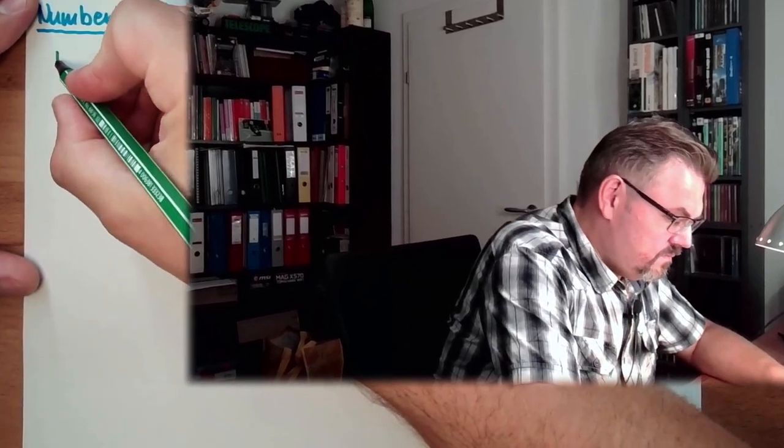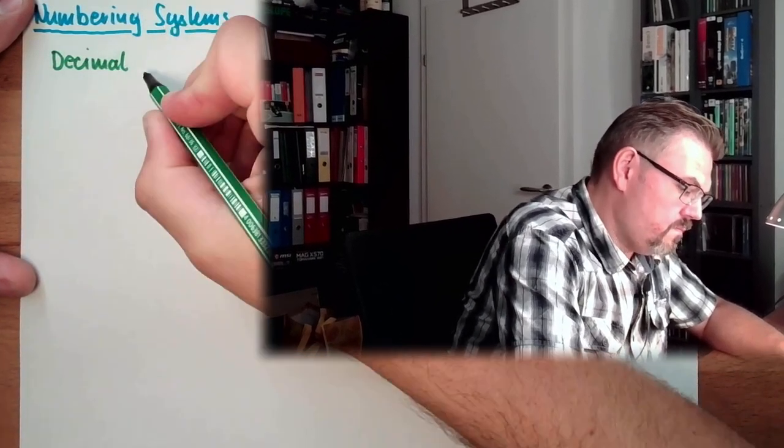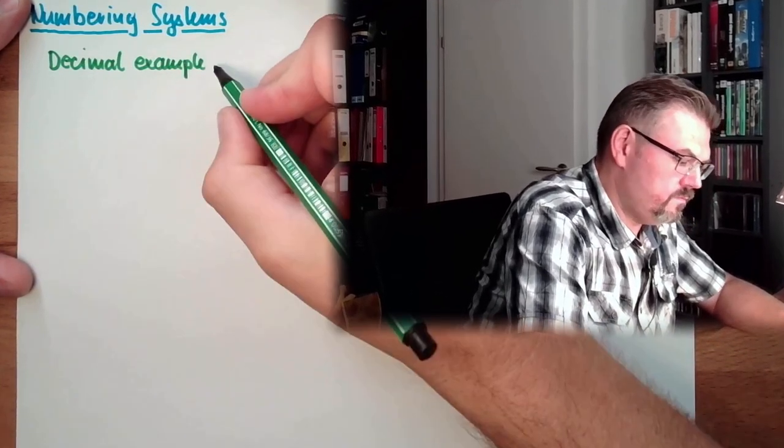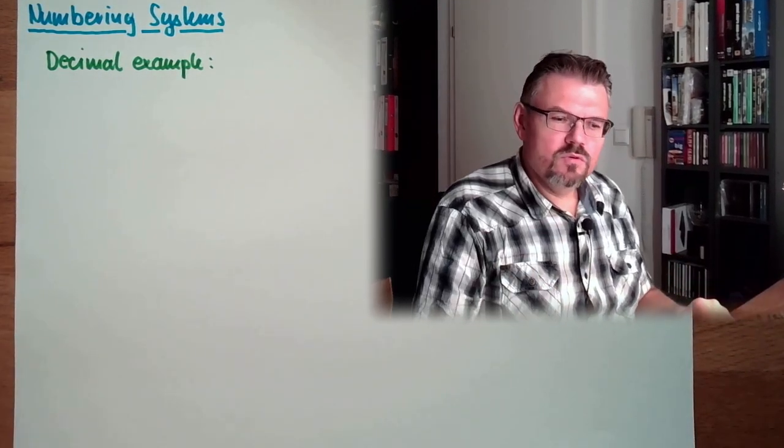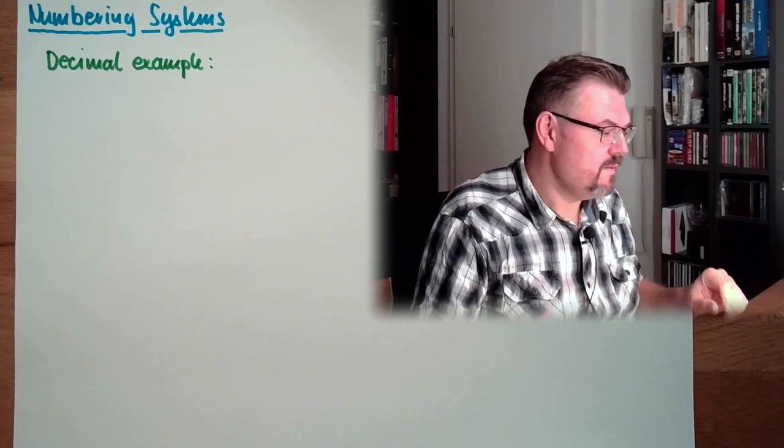We are very used to the decimal numbering system. This will be the base of my explanation. So we do have decimal. This is our usual numbering system, decimal. To know the number in our decimal system we are using symbols. We call them digits or numbers.